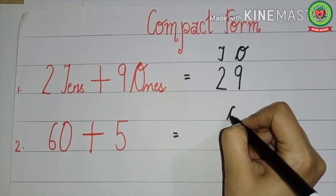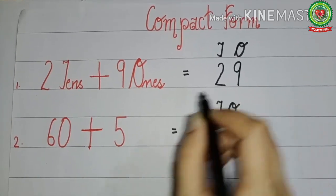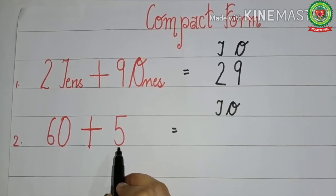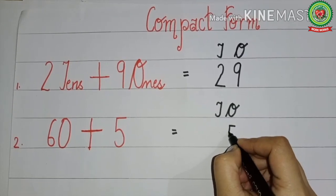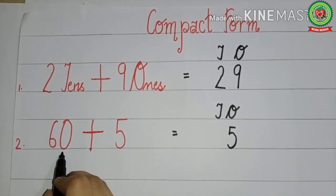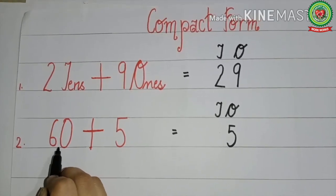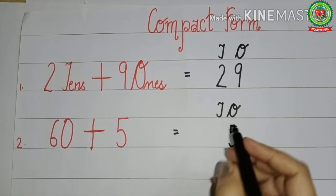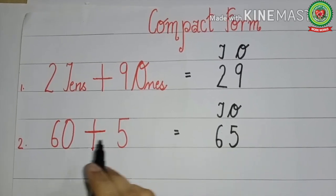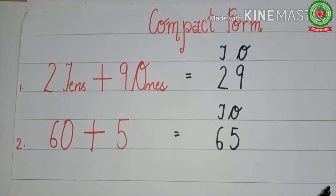We write the place value chart for ones and tens. 5 has no zero, so it comes under ones — we write 5 under ones. 60 has one zero, so we write 6 under tens. Therefore, 60 plus 5 equals 65.